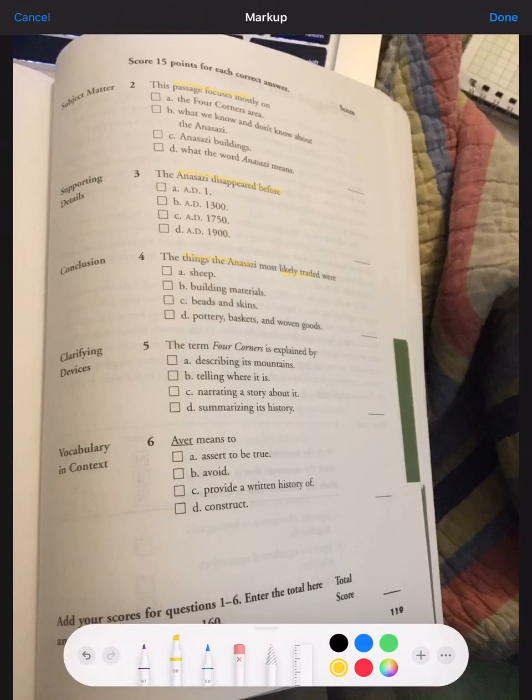Number five, the term Four Corners is explained by A, describing its mountains, B, telling where it is, C, narrating a story about it, or D, summarizing its history.